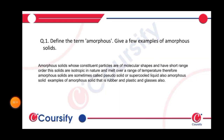The definition of amorphous solids: amorphous solids are those in which the molecular arrangement has only short-range order. These solids are isotropic in nature and melt over a range of temperatures. Therefore, amorphous solids are sometimes also called pseudo solids.